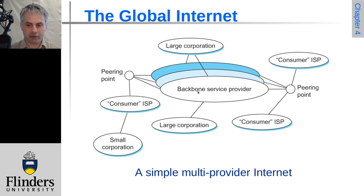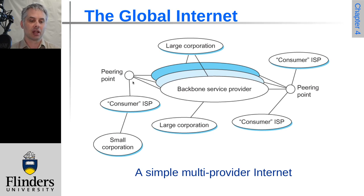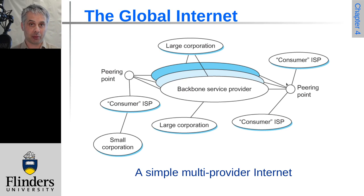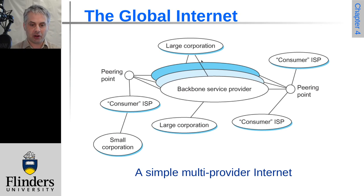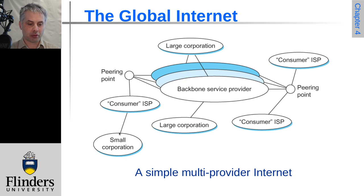You have the backbone service providers who are connecting a lot of these large entities together, and many large corporations will connect to more than one backbone for redundancy. They will tend to peer with each other in different locations, meaning their networks come together with switching and routing gear so data can take the shortest path. These are the wholesale or industrial-scale internet service providers. Smaller companies typically connect through a consumer or retail ISP.